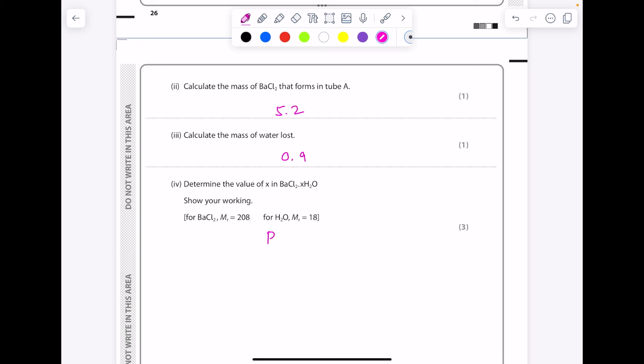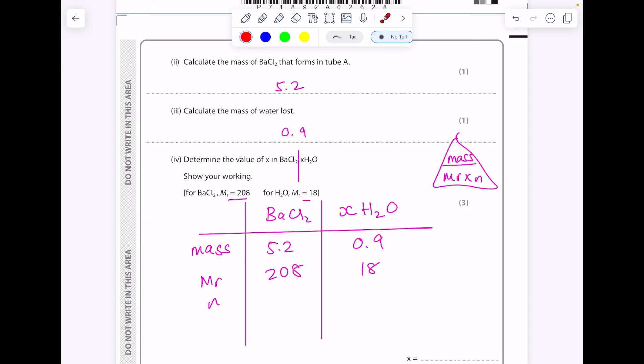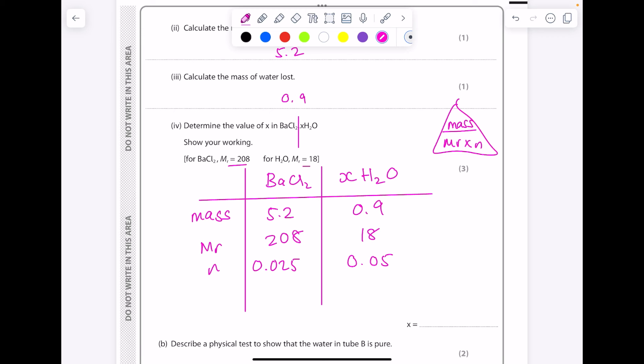Determine the value of x. So this is an empirical formula calculation, it just looks more difficult. But you start by effectively drawing a vertical line where the dot is, and that will sort you out in terms of how you arrange your table. As always: mass, MR, number of moles. Formula triangle here, you're ready to go. Put in the various masses. You've just found out that there's 5.2 grams of barium chloride, 0.9 grams of water. They've kindly given us the MRs. To find the number of moles, we do mass divided by MR, so that's 0.025, 0.05. Identify the smallest number and divide both numbers by that. So x is 2.